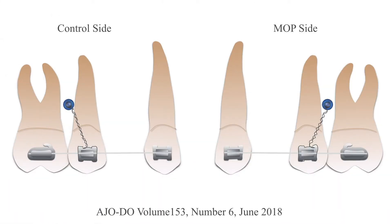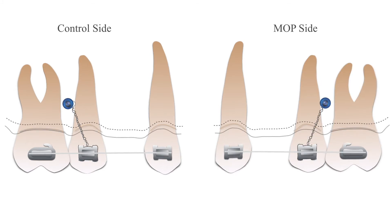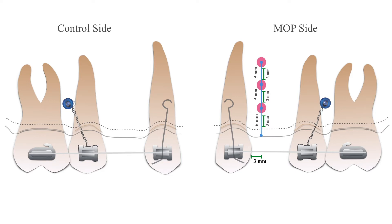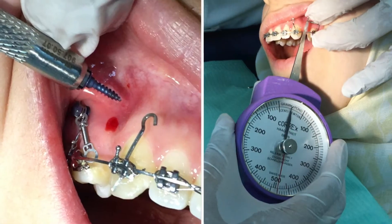After six months with complete healing of the extraction socket and reaching a 0.019×0.025 stainless steel wire, we performed three MOPs on the buccal bone distal to the canine on the MOP side. A power arm was then bolted on the canine bracket, and we retracted the canine using a closed coil spring near the center of resistance with 150 grams of force.